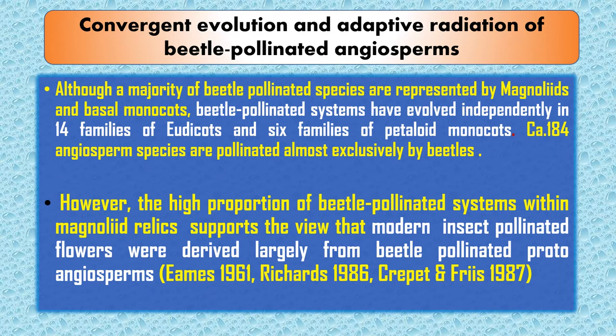Approximately 184 angiosperm species are pollinated almost exclusively by beetles. The high proportion of beetle-pollinated systems within Magnoliid relics supports the view that modern insect-pollinated flowers were derived largely from beetle-pollinated proto-angiosperms, confirming that beetles and angiosperms have co-evolved.